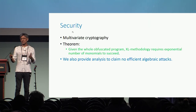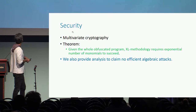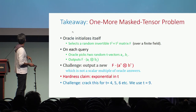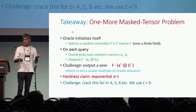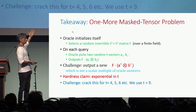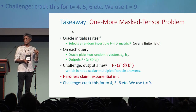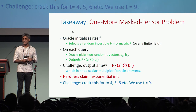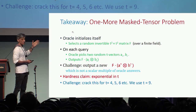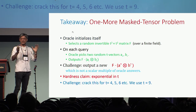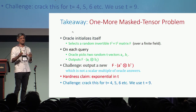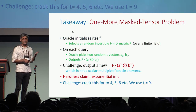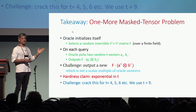Obviously we can't give a lower bound, because that would be equivalent to proving circuit lower bounds or something similar. One takeaway, since these are new assumptions, is that we can formulate a problem called the one more masked tensor problem: you are given lots of tensor products masked by a single matrix, and you are supposed to come up with a new masked tensor which is not a scalar multiple of the previous ones. We consider this problem to be hard, and our security is related to this problem.